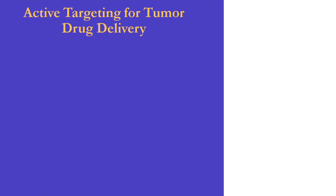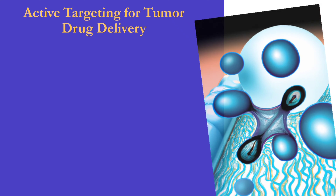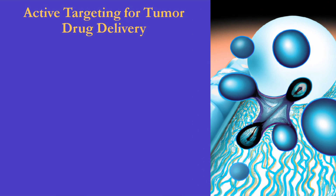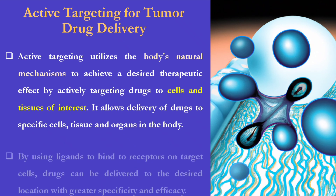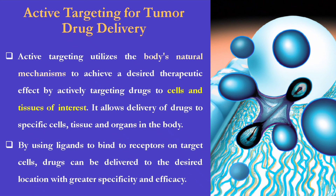We have two mechanisms to target the drug to tumors. Active targeting for tumor drug delivery utilizes the body's natural mechanisms to achieve a desired therapeutic effect by actively targeting drugs to cells and tissues of interest. It allows delivery of drugs to specific cells, tissue, and organs in the body. By using ligands to bind to receptors on target cells, drugs can be delivered to the desired location with greater specificity and efficacy.